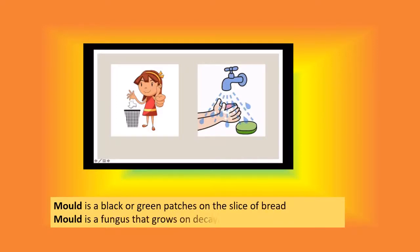After observing molds on the bread, we now know that a mold is black or green patches on the slice of bread, and also mold is a fungus that grows on decaying food like decaying bread.